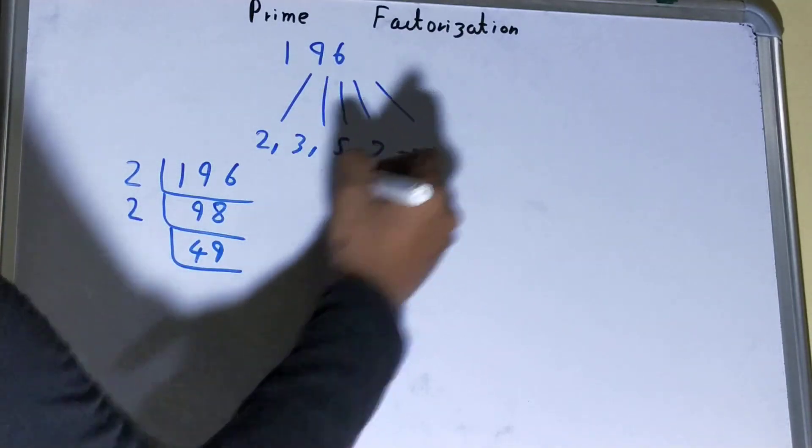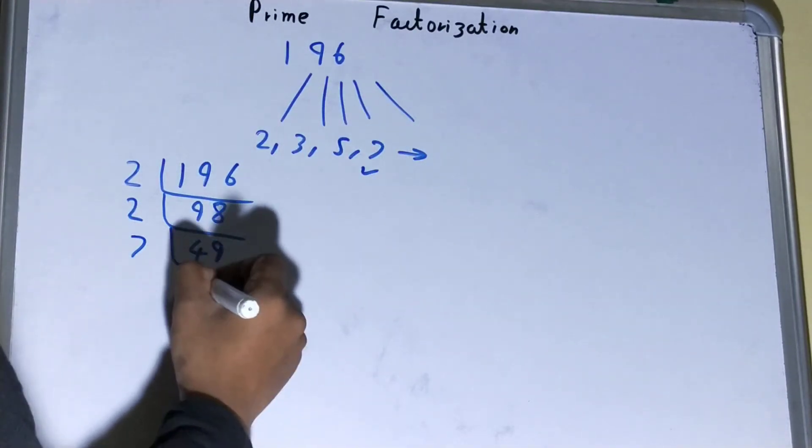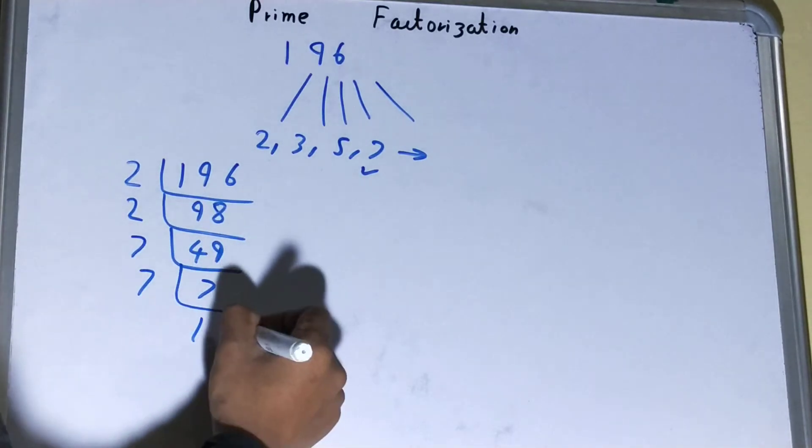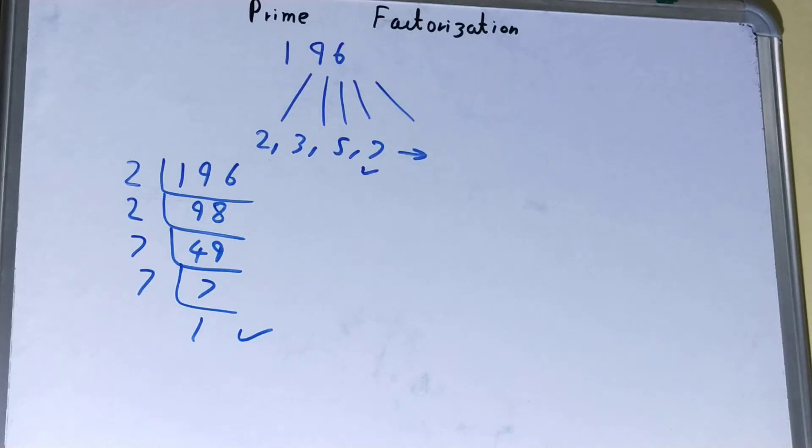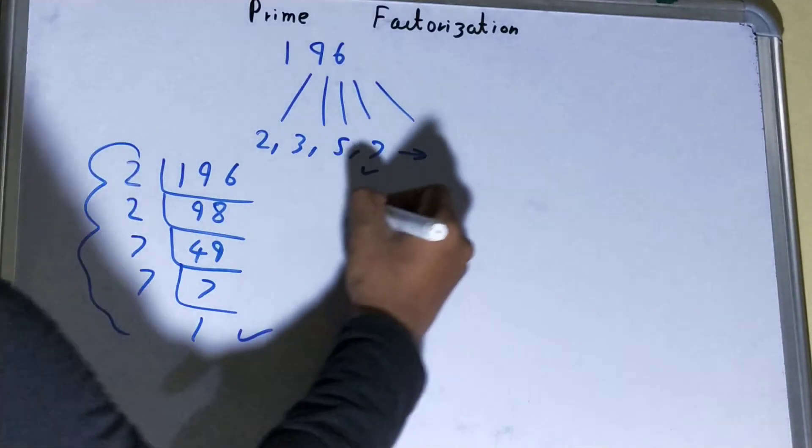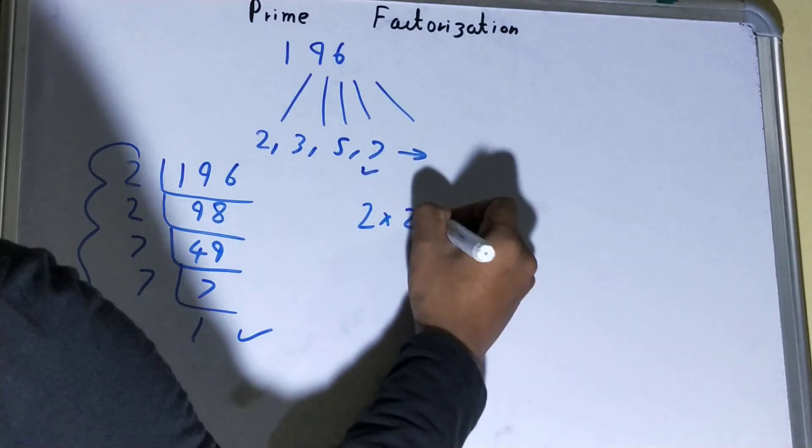Is 49 divisible by 7? Yes, we'll divide. We'll be left with 7. Again, 7 divisible by 7? Yes, we'll be left with 1. So when we are left with 1, our work is done. Whatever we have on the left-hand side will be our set of prime factors: 2 × 2 × 7 × 7.